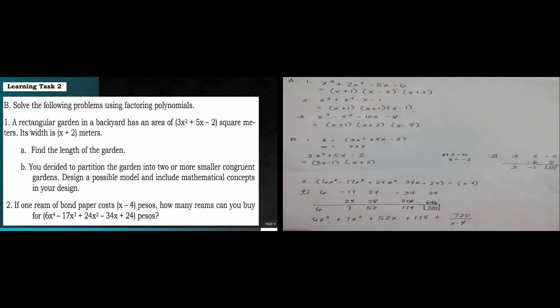For letter B, number 1, the value of the area is 3x squared plus 5x minus 2, and the width is x plus 2. Using synthetic division with x equals negative 2 as our divisor, we have coefficients 3, positive 5, and minus 2. Bring down 3. 3 times negative 2 is negative 6, plus 5 is negative 1. Negative 1 times negative 2 is positive 2, minus 2 gives 0. Therefore, the other factor is 3x minus 1, which serves as the length.